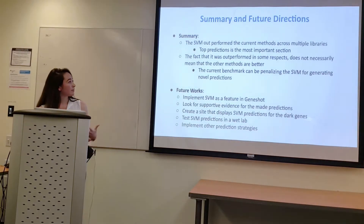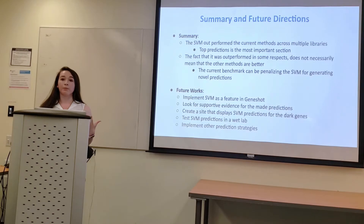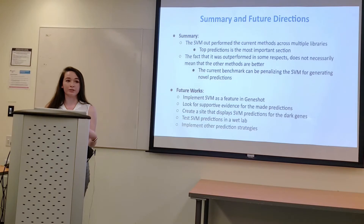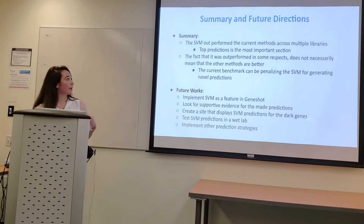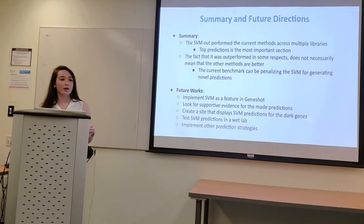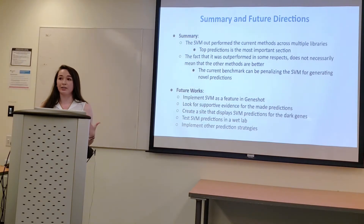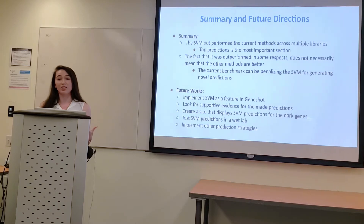To summarize, the SVM was able to outperform the current methods at the beginning, which is the most important part for wet lab researchers as they can only test the top predictions. In another library that was tested — the GO library — Tagger actually outperformed the SVM at the beginning. However, this makes sense as Tagger is a literature-based prediction method and GO is a literature-based library. Additionally, the ROC curve may be penalizing the SVM for making novel predictions and labeling them as false positives.